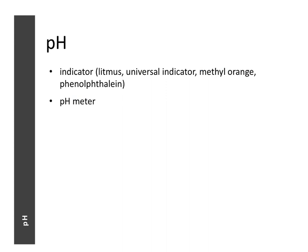To determine the pH of a solution, we can use two methods: an indicator or a pH meter. Indicators are familiar — an acid turns blue litmus paper red, and an alkali turns red litmus paper blue. Litmus paper is an indicator, but it's not the best because it can only tell us whether the pH is below or above 7.